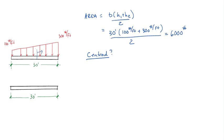So what I recommend we do is we turn this into two separate loading conditions. One that's 100 pounds per foot, and the second one that's a triangle that goes from 0 to 200 pounds per foot. It's 200 because we've already accounted for 100 pounds per foot down here.